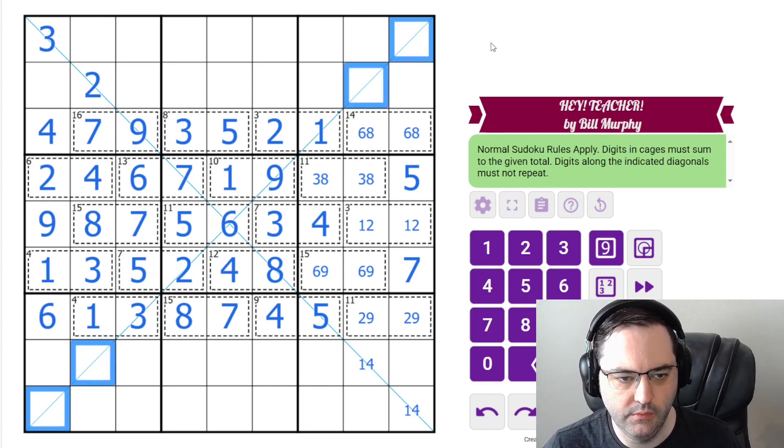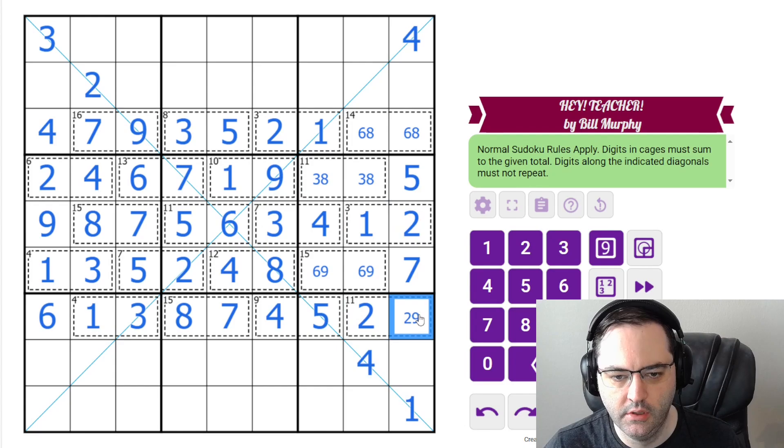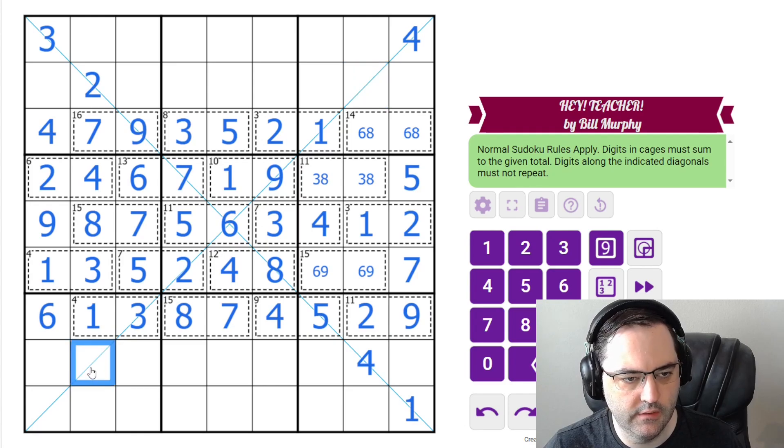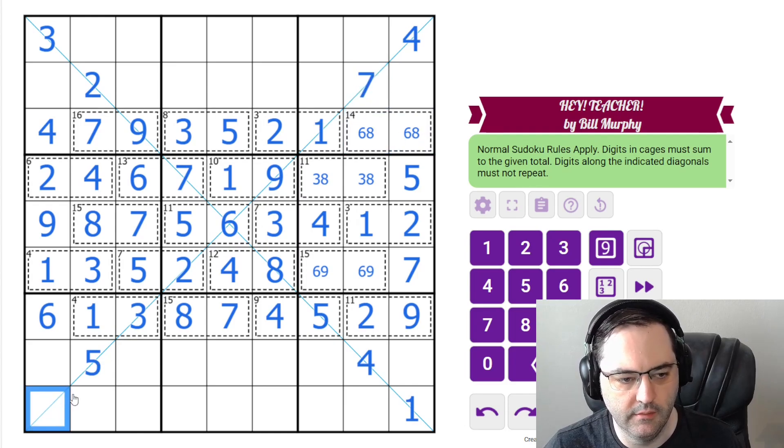Along this diagonal, we need 4, 5, 7, and 8. You can see this can't be an 8, a 5, or a 7. So this must be our 4. And it's going to resolve 1, 4 here, 1, 2 here, 9. So we still need 5, 7, and 8. The 5 must go here because we have 7 and 8. And then the 7 must go here because we have an 8 in the box. So that's the diagonals done.